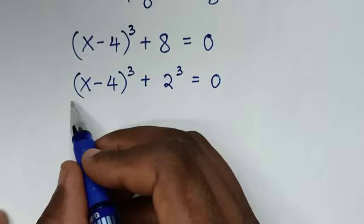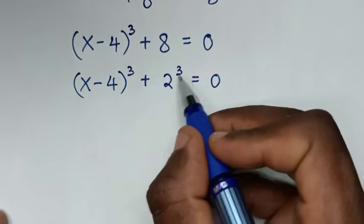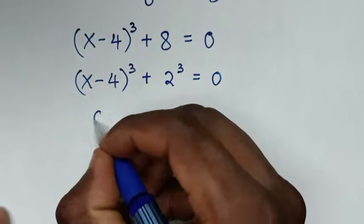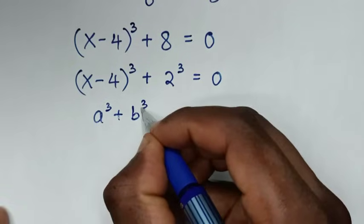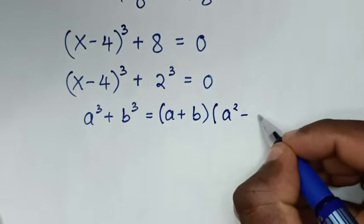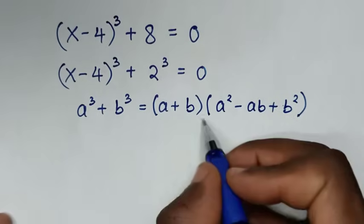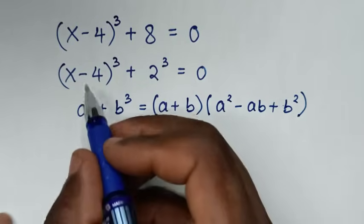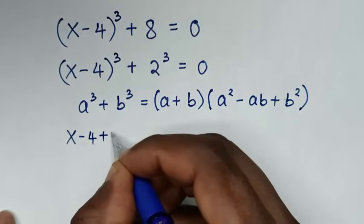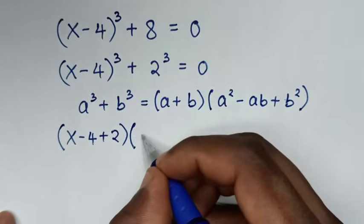In the next step, the left side is in the form of the algebraic rule a³ + b³, so we'll apply the sum of cubes rule: a³ + b³ = (a + b)(a² - ab + b²). Here a = (x - 4) and b = 2, so (a + b) is (x - 4 + 2).